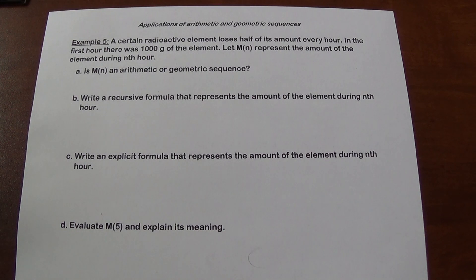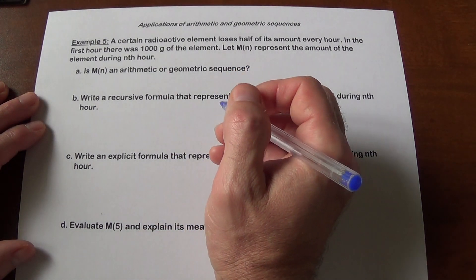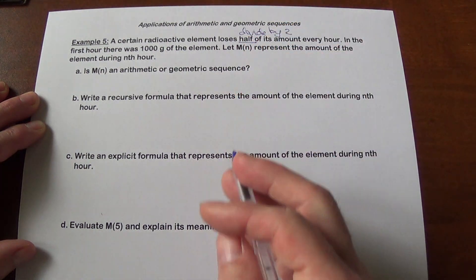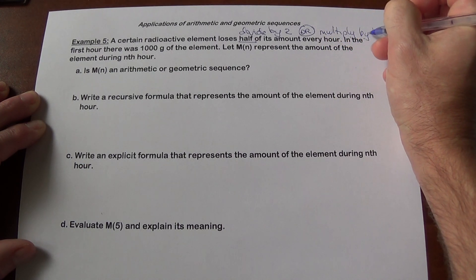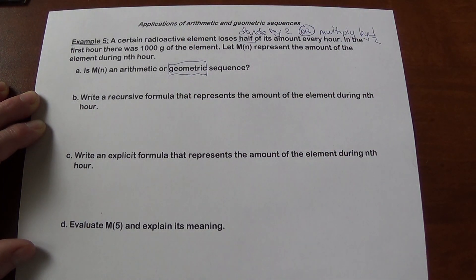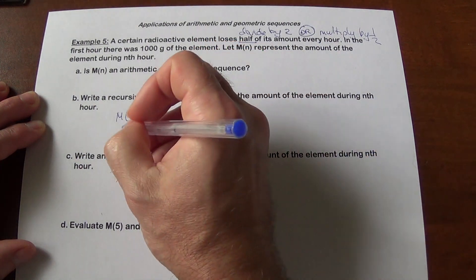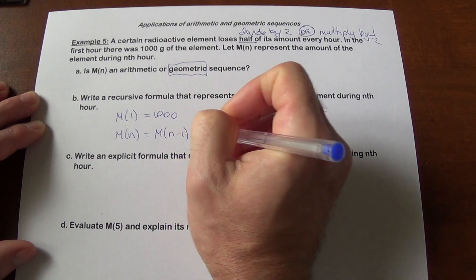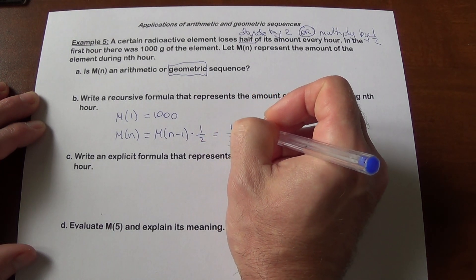A radioactive element loses half of its amount every hour — this deals with radioactive decay. We start with 1000 grams of the element, and m represents the amount. Is this arithmetic or geometric? We lose half, which means dividing by 2, or the same as multiplying by one half — so it's geometric. The recursive formula: the first element is 1000, and each subsequent element is the previous element multiplied by one half, written as one half times m of n minus 1.